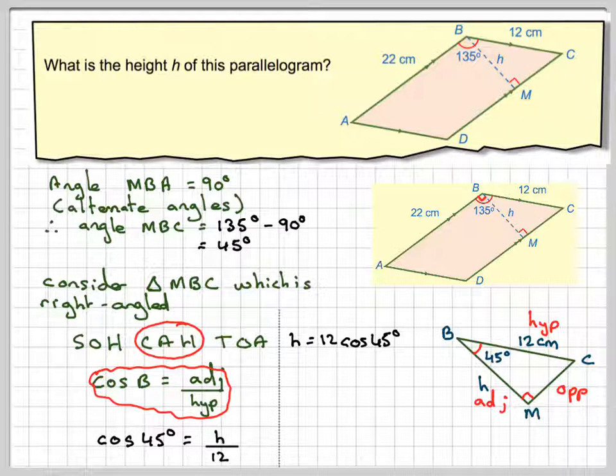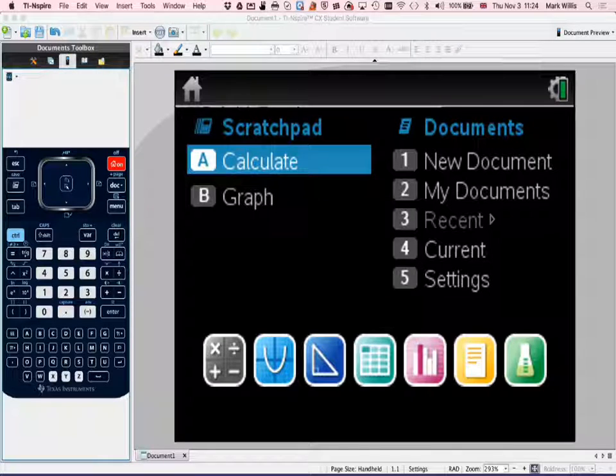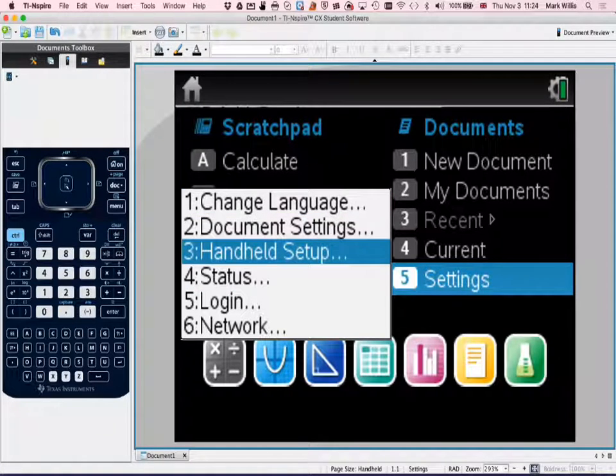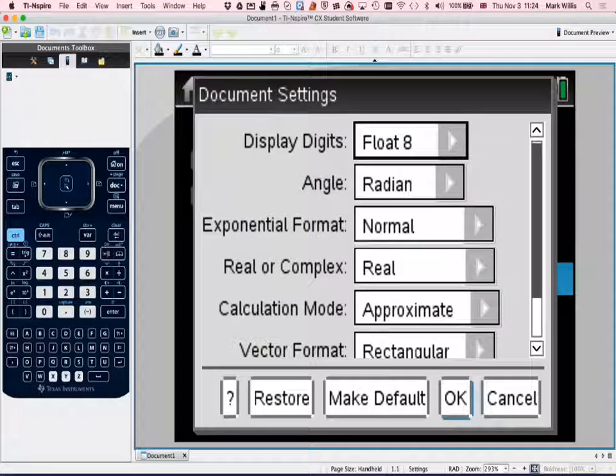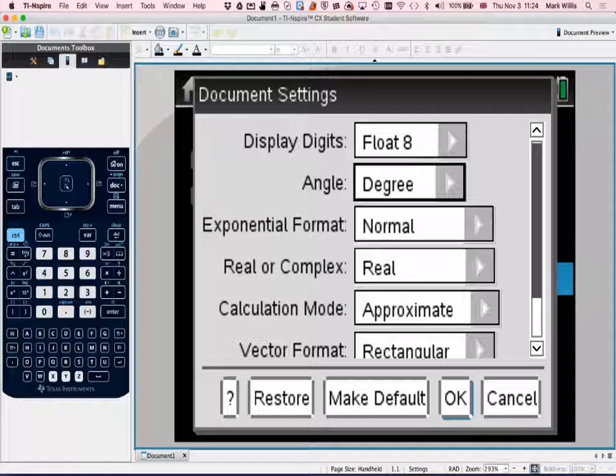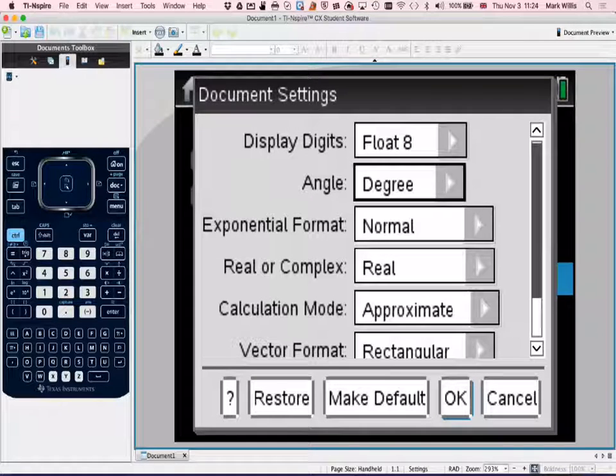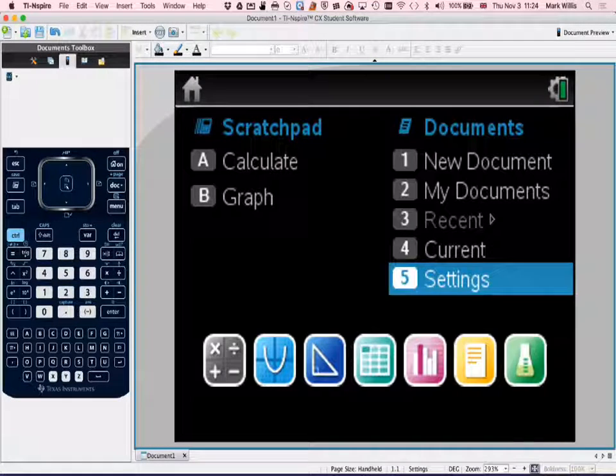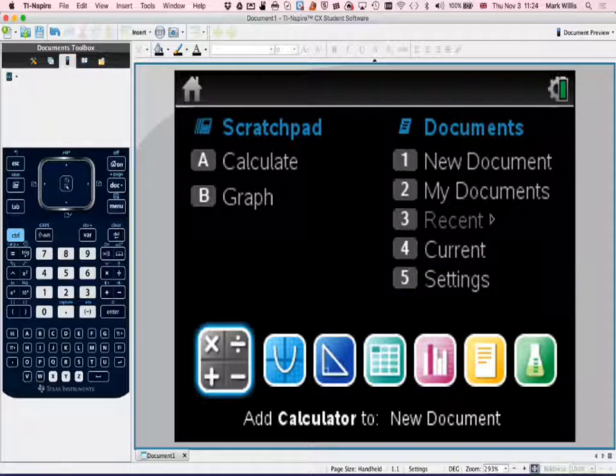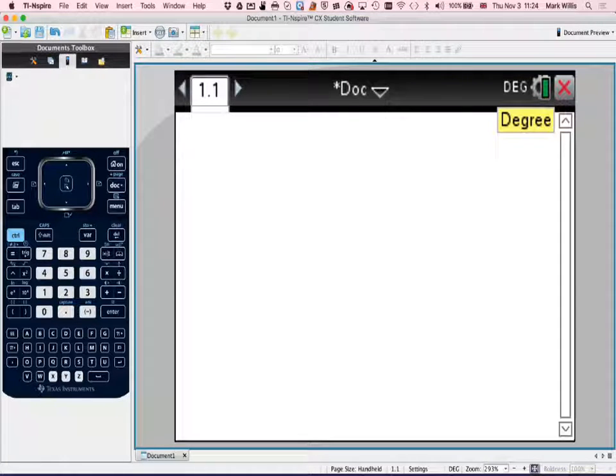Now, going to my calculator, first of all, you should just check what your document settings are. Mine are actually radians by default, so I've just changed that to degrees. If you're doing studies, you should probably make that default. And then press calculation mode, and it will always say in the top corner what it is, but it's not possible to change it there.